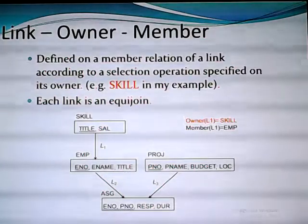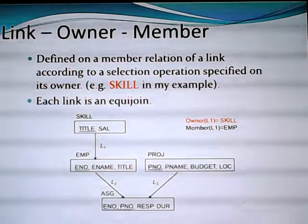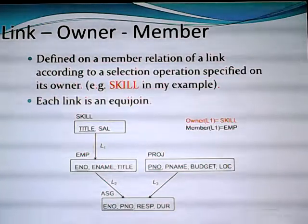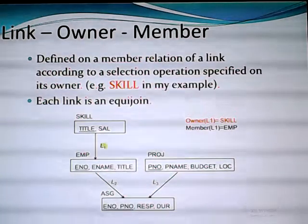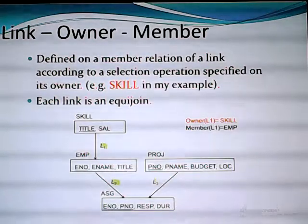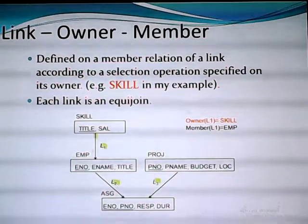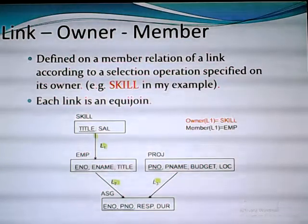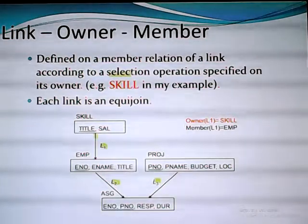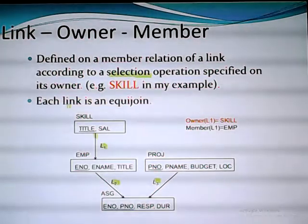Now I go to links. I will show you the owner and the member of a link. A link may be considered as a relationship between two relations. You see here I have links L1, L2, and L3. For each link, the source of the arrow we call the owner of the link, and the target of the arrow is the member. The owner will be used for a selection operation, which is used when you make a derived horizontal fragmentation. Each link is an equi-join.